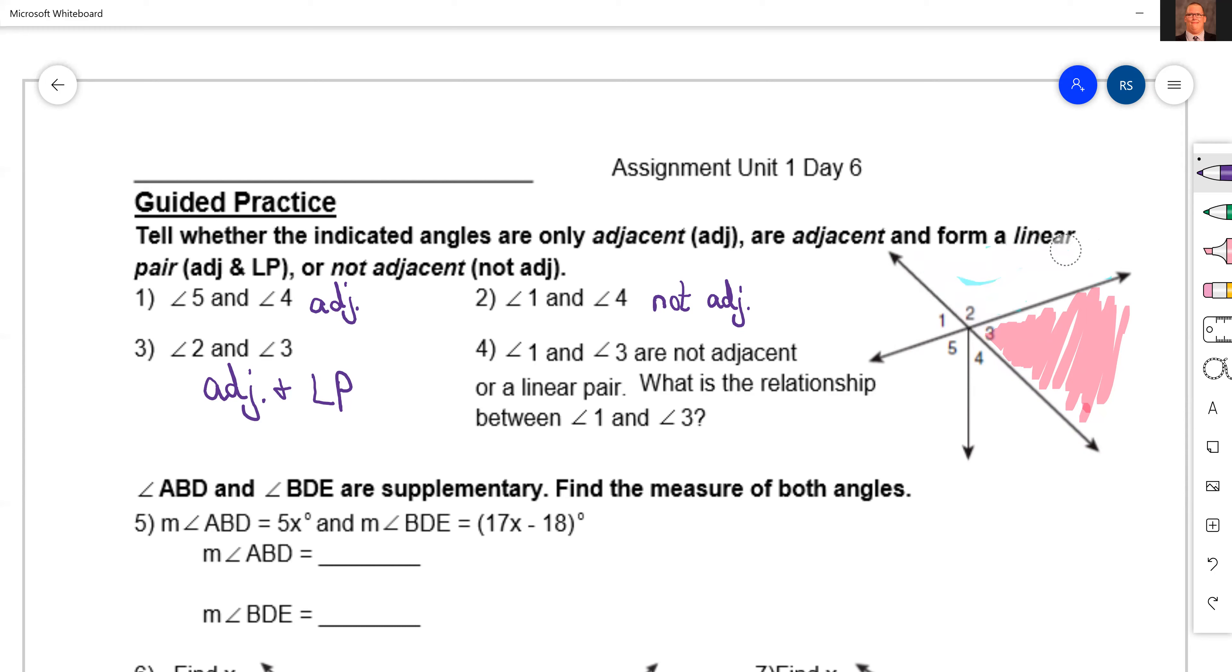So let me kind of shade it in here and maybe we can see something special that we've learned today. There's three over there, here's one right here. They tell us it's not adjacent, it's not a linear pair, but what relationship do they have that we've learned today? They're vertical angles. There's the first four questions.